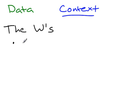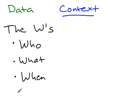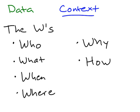There's a certain number of W's that we're going to be looking at, but we want to ask who, what, when, where, why, and sometimes we also want to ask the question how. How is the data collected? It doesn't really have a W at the beginning, but there's one there at the end.